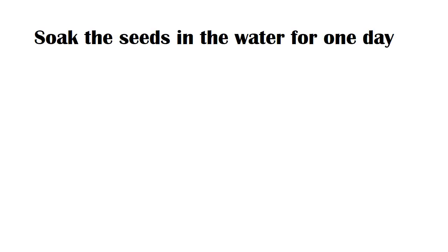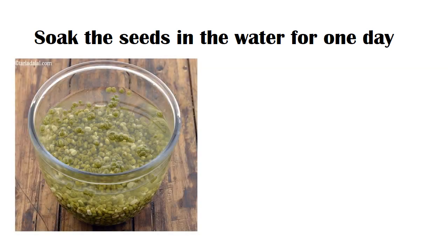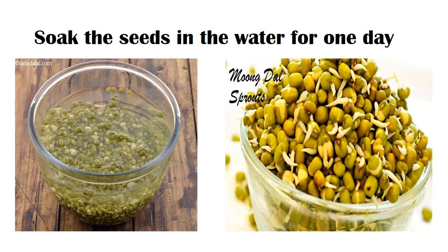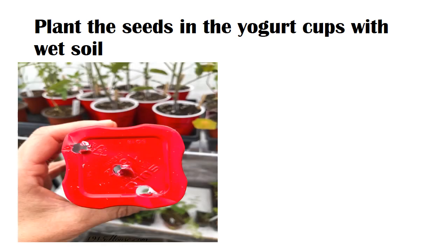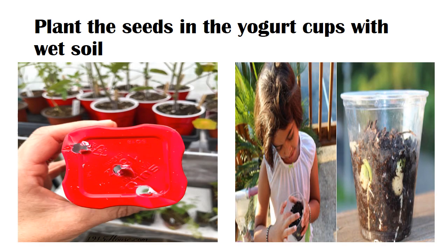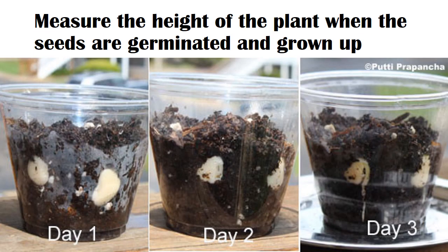Let's do a small activity to understand the growth of organisms. You have to take a few yogurt cups with soil, some green gram seeds, and a measuring tape. Take the green gram and soak the seeds in water for one day. After one day you can see green gram sprouts. Next, plant the seeds in the yogurt cups with wet soil.